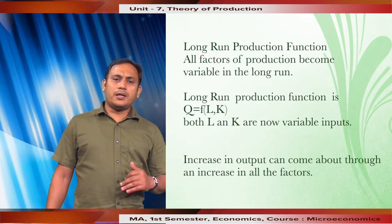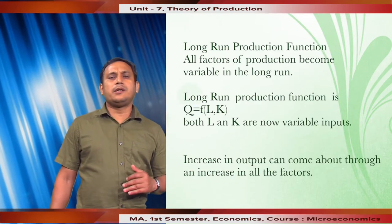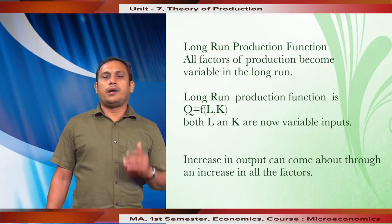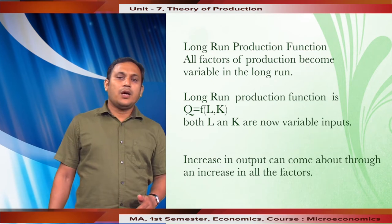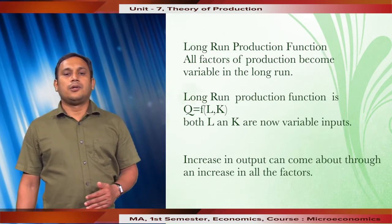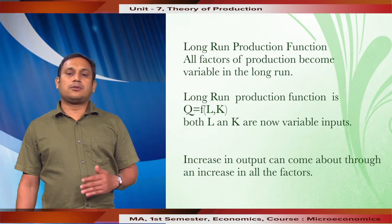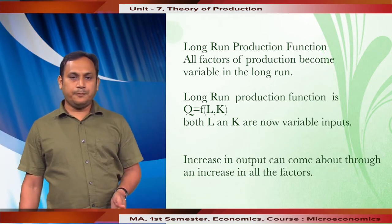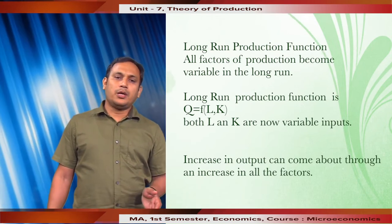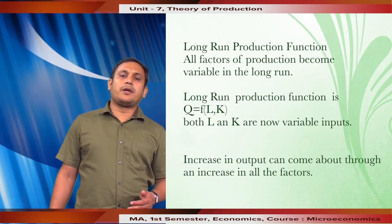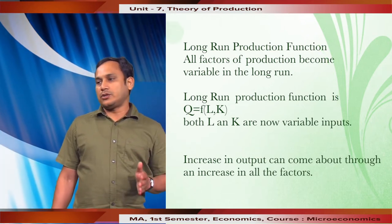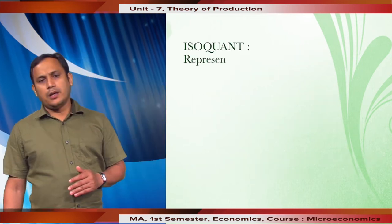In the long run, it is possible to increase the supply of all factors as and when required. Thus, all factors of production become variable in the long run. In our production function in the long run, both labor and capital are variable inputs, and accordingly increase in output can come about through an increase in all the factors.